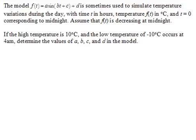The model f(t) = a sin(bt + c) + d is sometimes used to simulate temperature variations during the day, with time t in hours, temperature f(t) in degrees Celsius, and t = 0 corresponding to midnight. Assume that f(t) is decreasing at midnight.